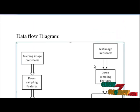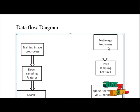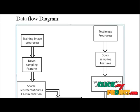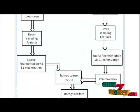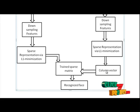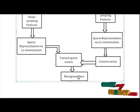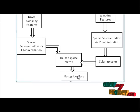We then give one test image that may or may not be in our dataset. The same downsampling features are extracted from the test image as well. It is also arranged in non-zero representation via L1 minimization and a column vector is constructed. This vector is matched to our trained sparse matrix, and the subject whose training samples best approximate the test sample is identified. Finally, we get the recognized face. If any person not represented in our dataset is given, it will return 'not present'.